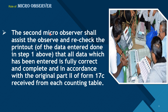The second Micro-Observer shall assist the observer and recheck the printout of the data entered done in step 1 above, ensuring that all data which has been entered is fully correct and complete in accordance with the original Part 2 of Form 17C received from each counting table.